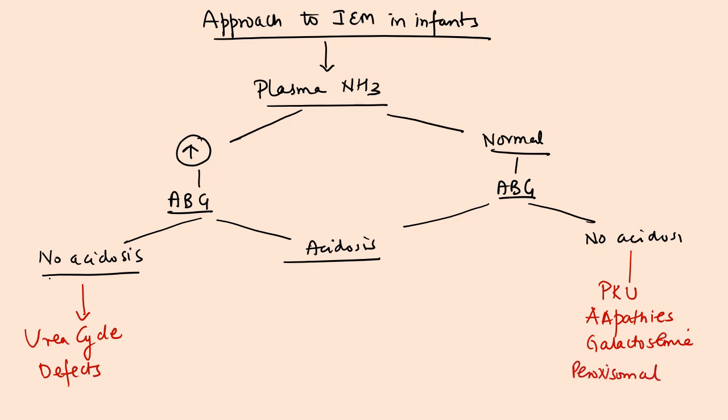If acidosis is present, whether ammonia is normal or raised, you would see if the ketone bodies are present. You would think of mitochondrial defects and organic acidemias.